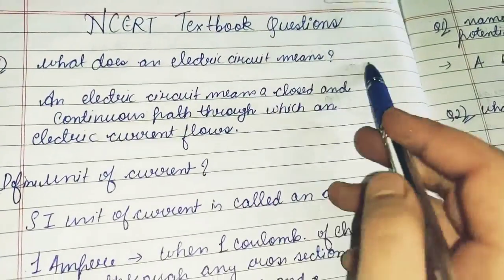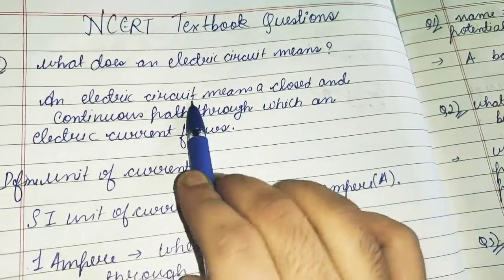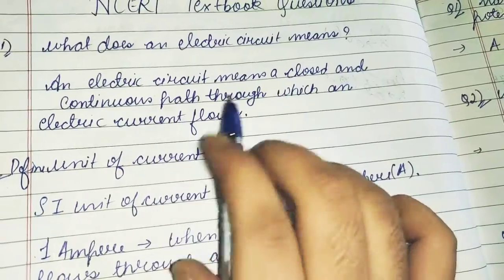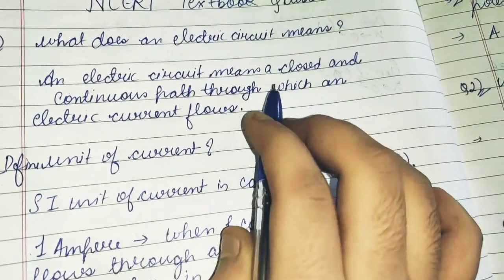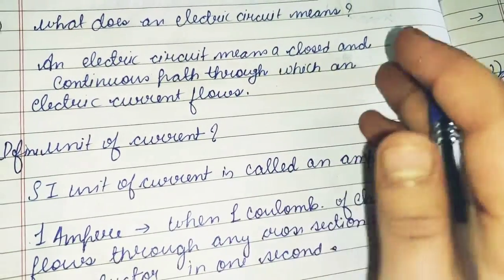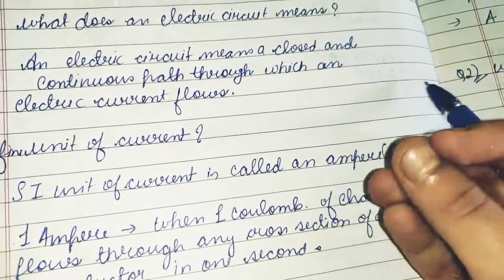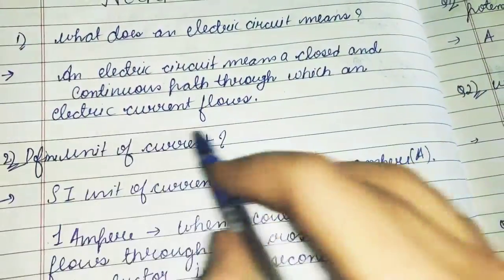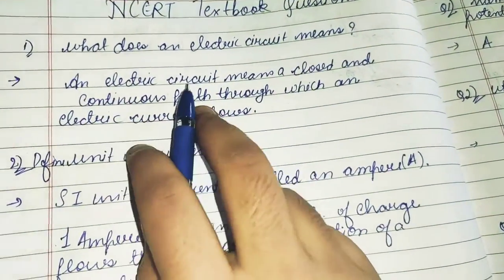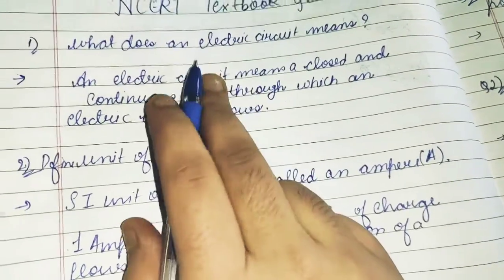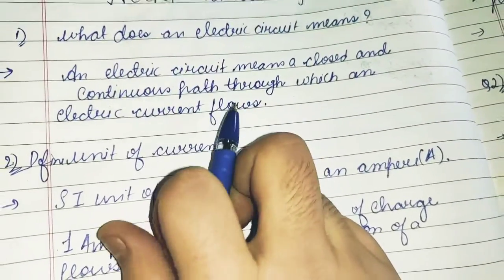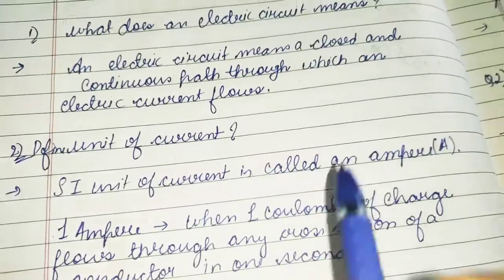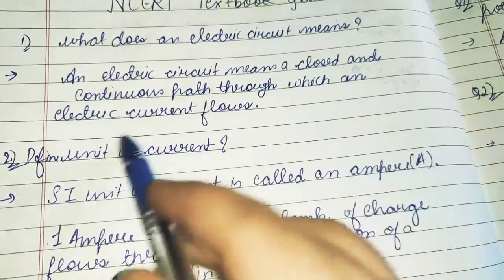What does an electric circuit mean? The electric circuit means a closed and continuous path through which electric current flows. You can write this, or a continuous conducting path consisting of metal wire, switch, etc. Just understand the concept: the electric circuit means a continuous path in which electric current flows. This must be written.